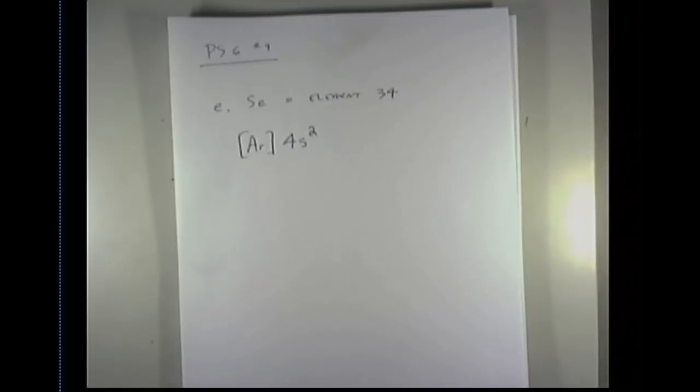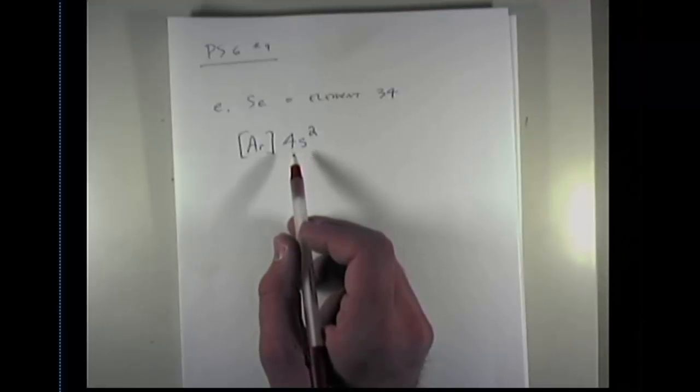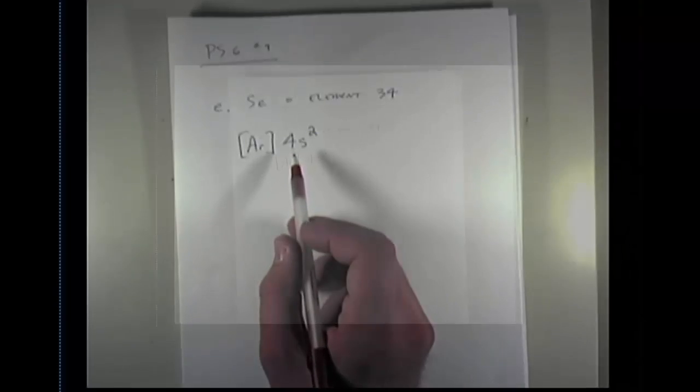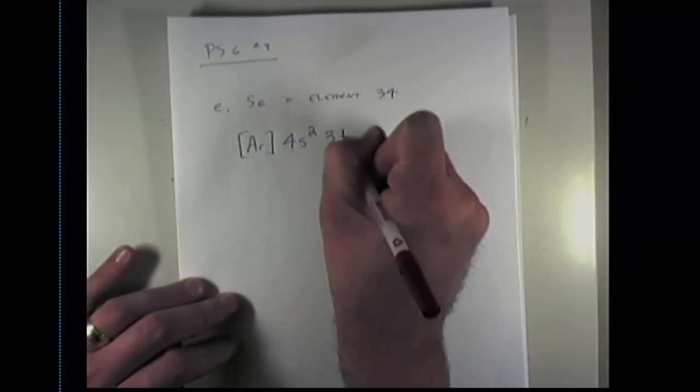Now you might remember me telling you that D orbitals on the same row in the periodic table are actually one energy level lower than the S orbitals and P orbitals in the same row. So in other words, on row 4, potassium and calcium correspond to 4S orbitals. But as soon as I get to element number 21, scandium, I am in the 3D level.